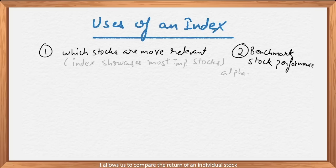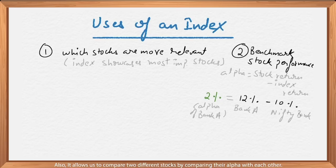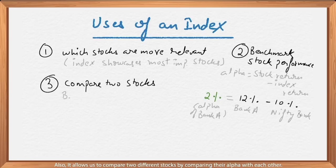Next, it allows us to compare the return of an individual stock. If an index returns 10% in a period, and a particular stock returns 12%, the excess return of 2% is called the alpha of the stock. Higher the alpha, better is the stock performing than the sector. Also it allows us to compare two different stocks by comparing their alpha with each other.